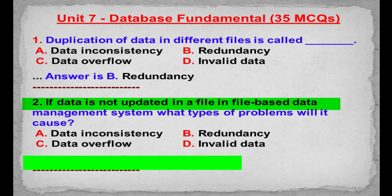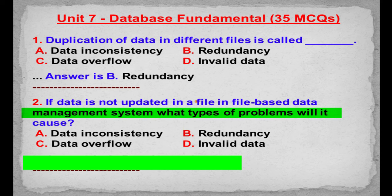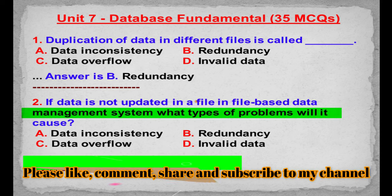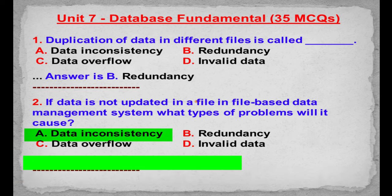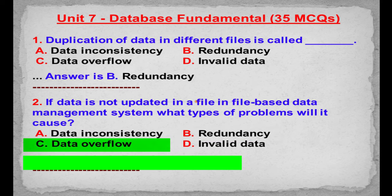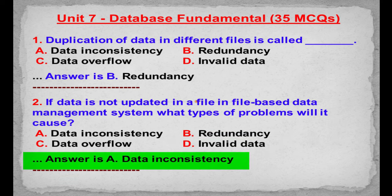MCQ number 2: If data is not updated in a file in a file-based data management system, what type of problem will it cause? Option A: Data inconsistency. Option B: Redundancy. Option C: Data overflow. Option D: Invalid data. Correct answer is Option A: Data inconsistency.